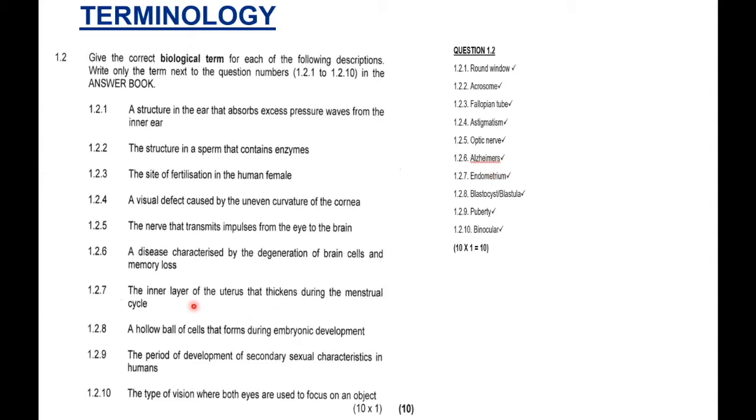1.2.7: The inner layer of the uterus that thickens during the menstrual cycle. Inner layer, we know is the endometrium. Again, very important. Know this term well. 1.2.8: A hollow ball of cells that forms during embryonic development. The hollow ball of cells we should know is the blastocyst. And of course, I've seen in many memos they also accept blastula. I always remember blastocyst. That's the word. So, you learn the word that is easy for you to remember. And most importantly, the one that you can spell. 1.2.9: The period of development of secondary sexual characteristics in humans. So, when do secondary sexual characteristics in humans develop? Obviously, during puberty.